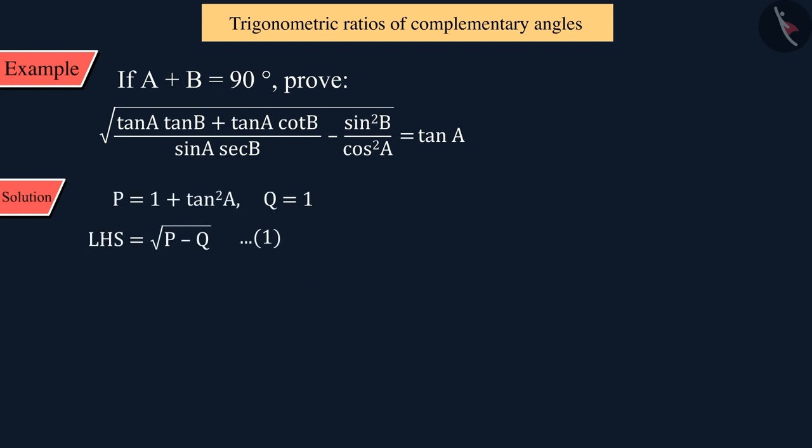Substituting the values of P and Q thus obtained into equation 1, we get square root of 1 plus tan squared A minus 1. On solving this, the value of the left side is tan A, which is equal to the right side of the given equation. Thus, we proved this equation.